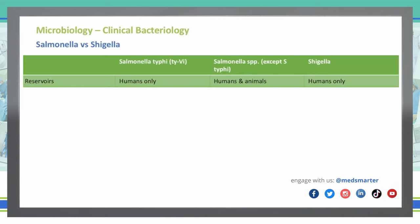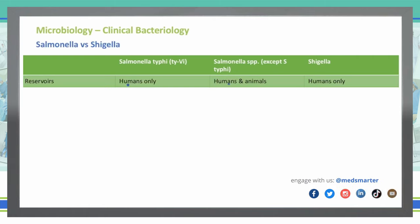What are the reservoirs for these various bacteria? The reservoir is the habitat in which these organisms normally live, grow, and multiply. With Salmonella typhi, these only grow in humans. With Salmonella that is not typhi, it can be in humans but also in animals. Shigella is in humans only as well. So the difference is that the other Salmonella species besides typhi can have an animal reservoir.